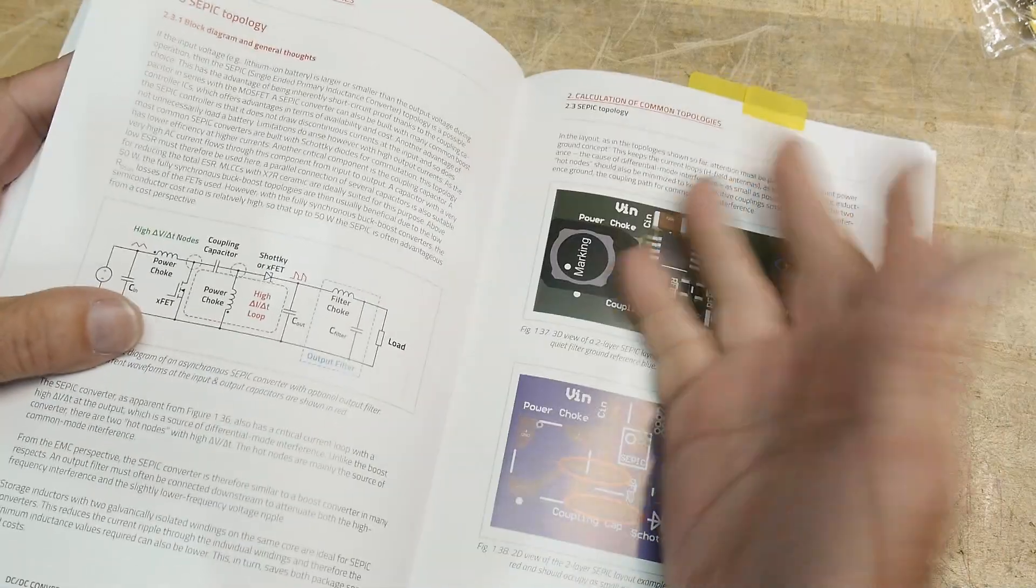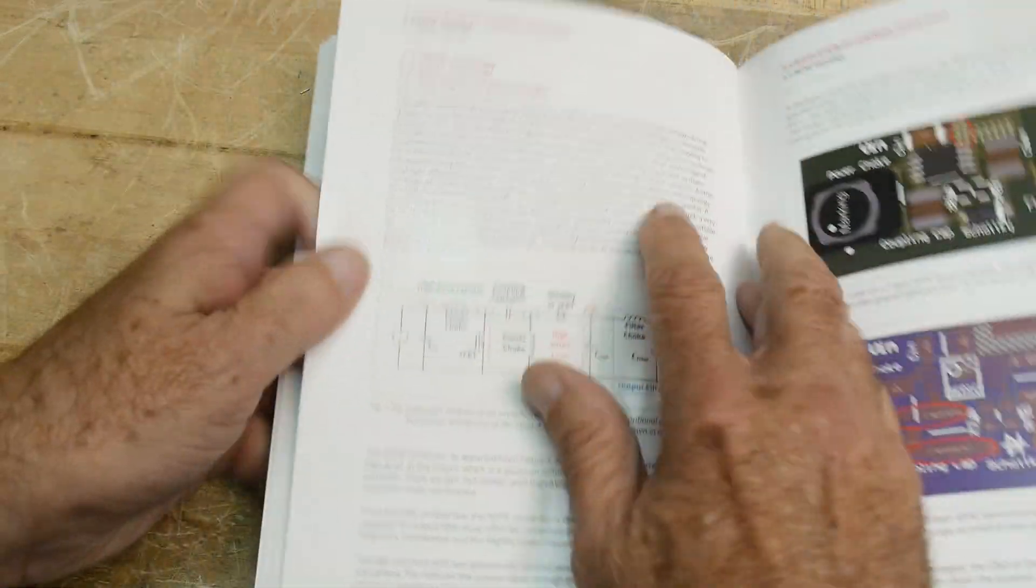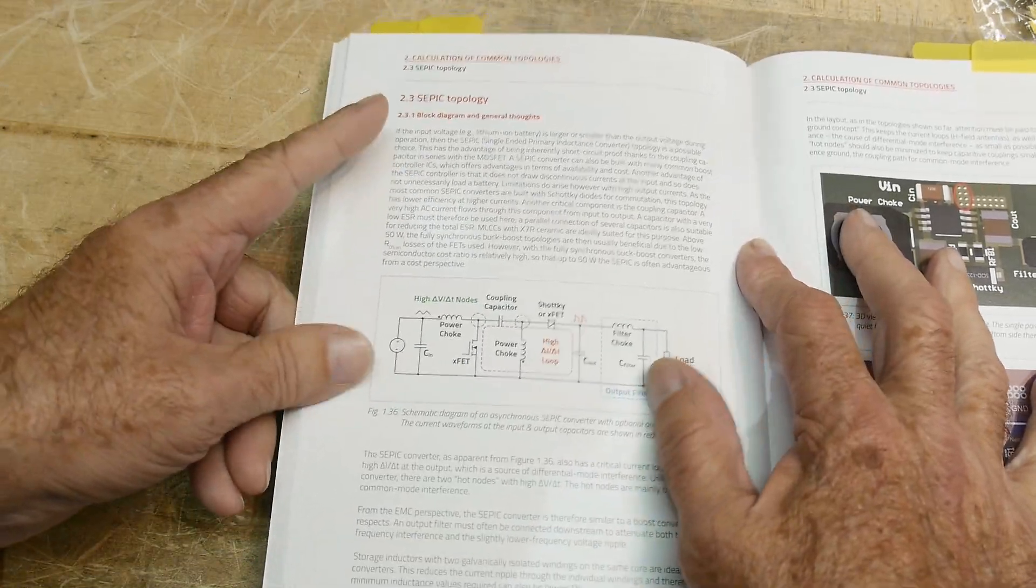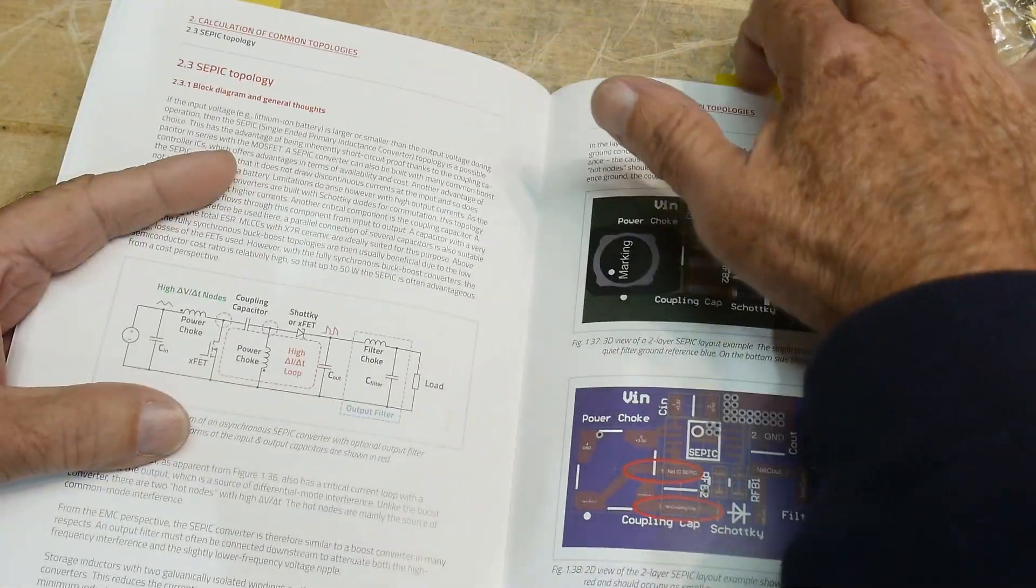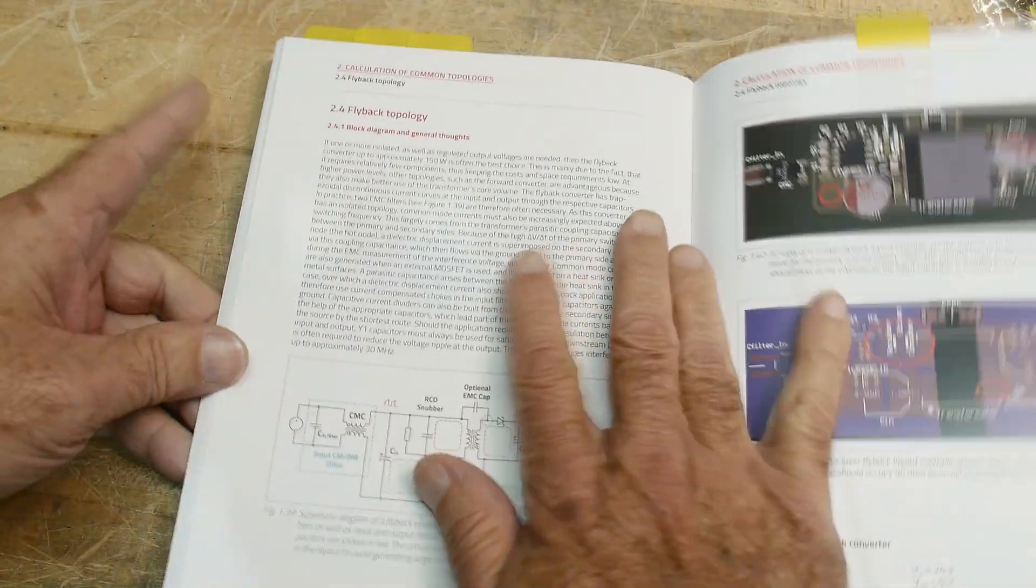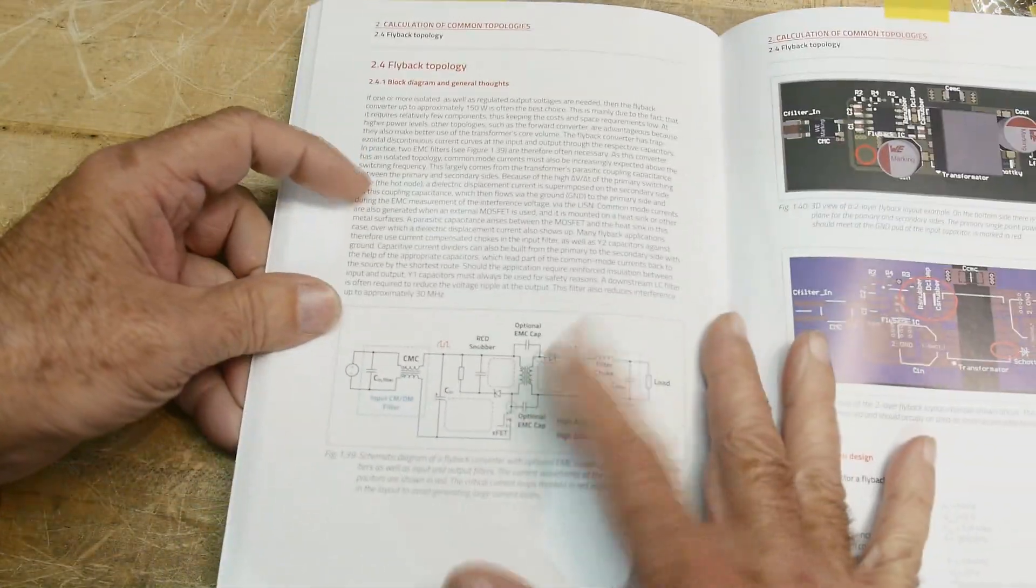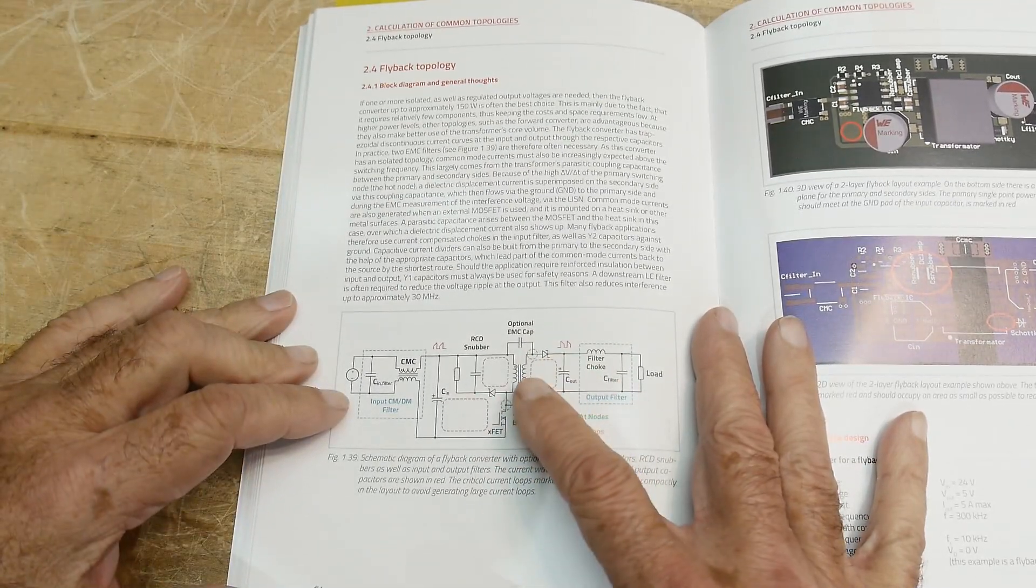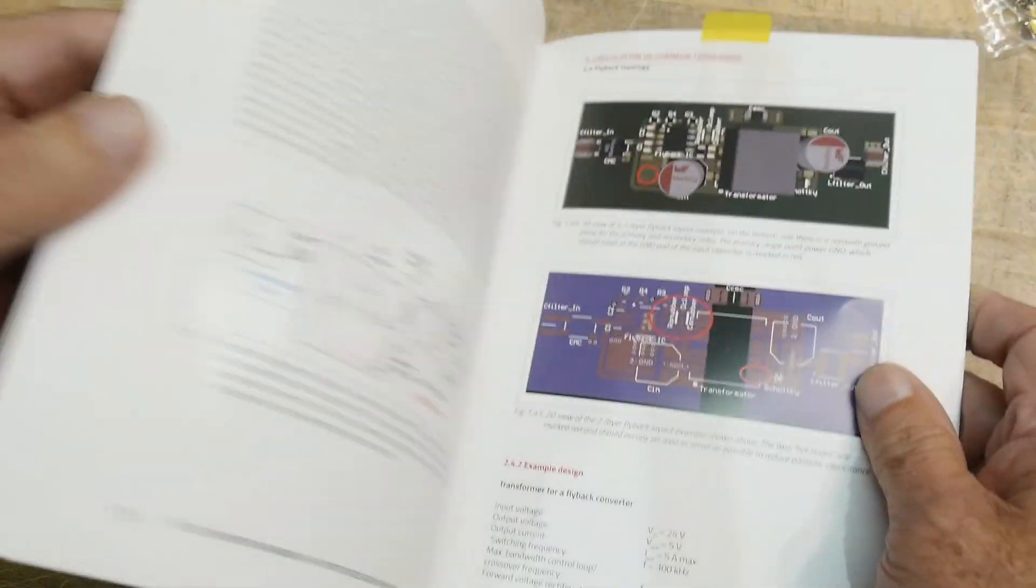Then if you want to do both, you don't know whether you're going to be going higher or lower, you can use the SEPIC technology, which is a little more complicated. And then finally, the other topology they have is a flyback, where you actually have a dedicated transformer to do the work for you. So they talk about those four types of topologies.